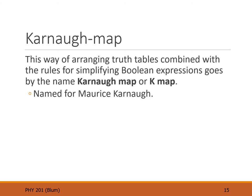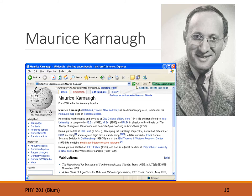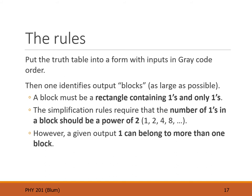Marrying the idea of gray code and truth tables to look for simplification is what's known as a Karnaugh map, or K-map, named after Maurice Karnaugh. Maurice Karnaugh was a researcher at both Bell Labs and IBM in the 1950s and 60s.